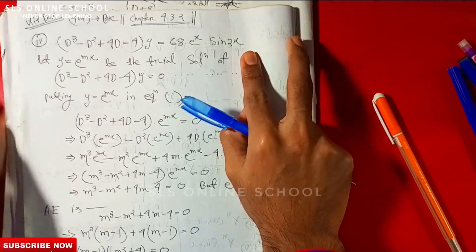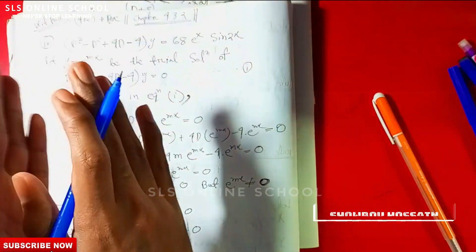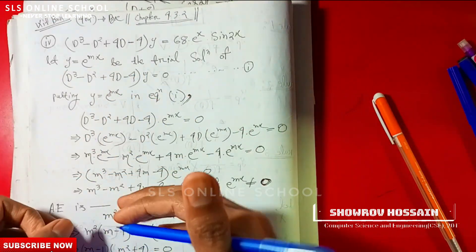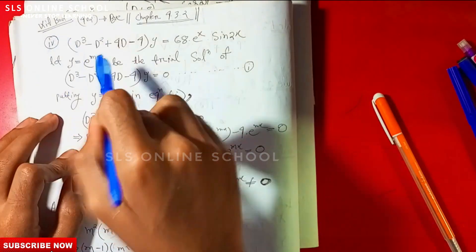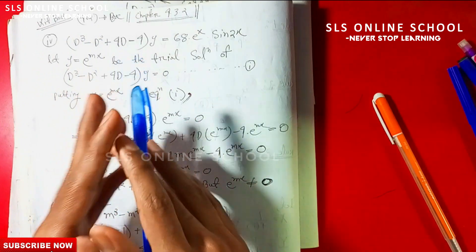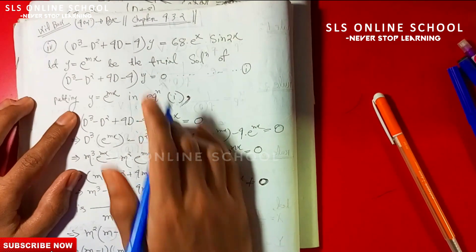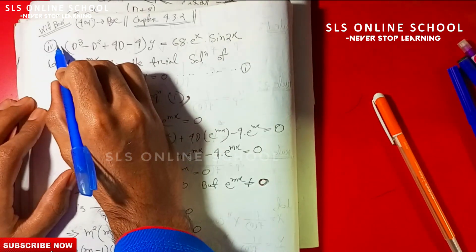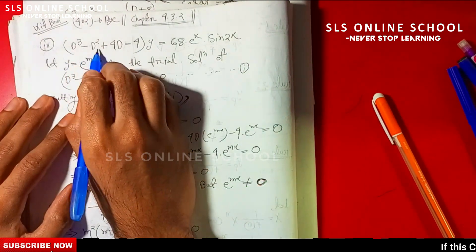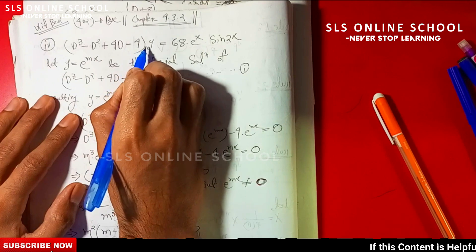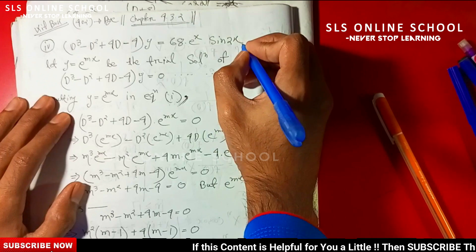Today I am going to cover non-homogeneous equations. The formula to solve a non-homogeneous equation: we have the example D-cube minus 3D-square plus 4D minus 4 into y is equal to 68 into e to the power x and sine 2x. This is the important example.